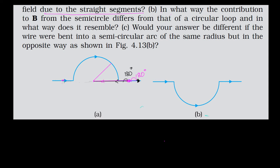For other elements, the R vector makes an angle of 0 degrees. This is because whenever we take the vectors co-initially, the current element and the tail of the R vector are at the same point, making an angle of 0 degrees. So the straight segments contribute nothing to the field.